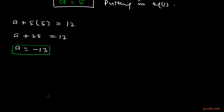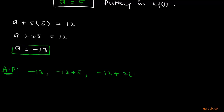Therefore, we can write the AP as follows. The first term is minus 13. Adding the common difference gives the second term: minus 13 plus 5. Adding twice the common difference gives the third term: minus 13 plus 10. So the first three terms are minus 13, minus 8, and minus 3. This is the solution of the question. Thank you.